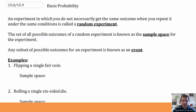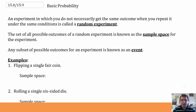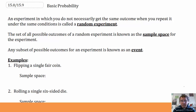The set of all possible outcomes of a random experiment is known as the sample space for the experiment — all of the possible things you can get as a result of your random experiment. Any subset of possible outcomes for an experiment, a subset of the sample space, is known as an event.